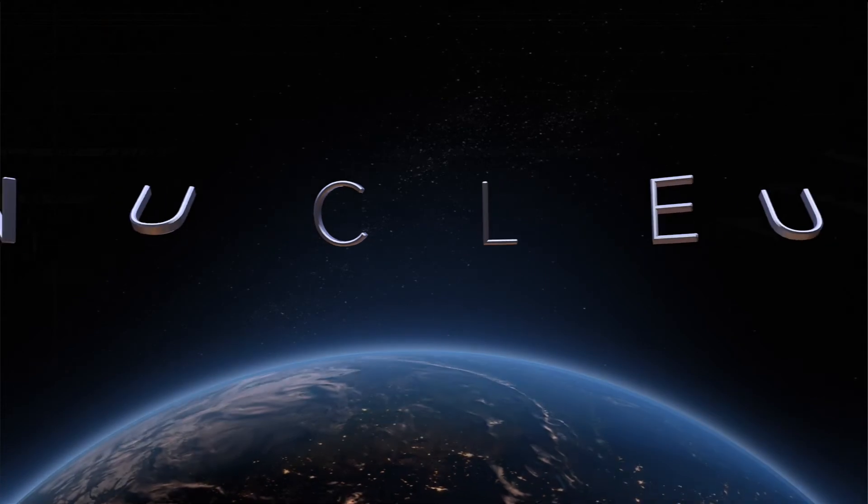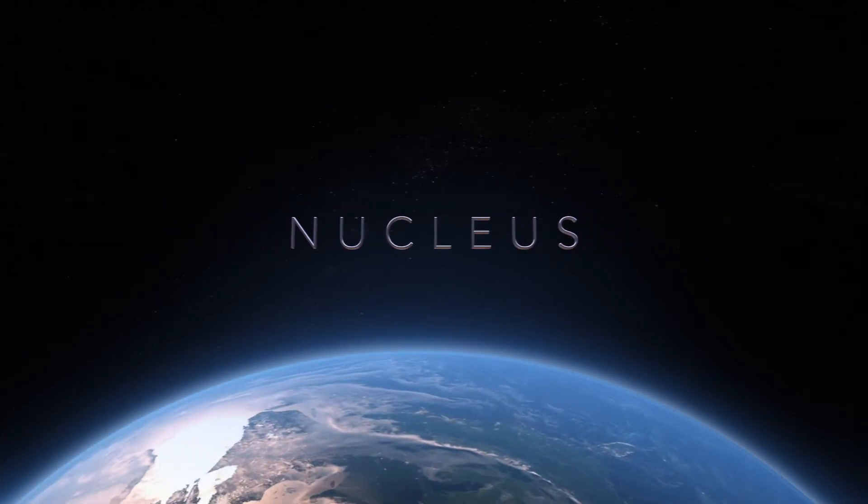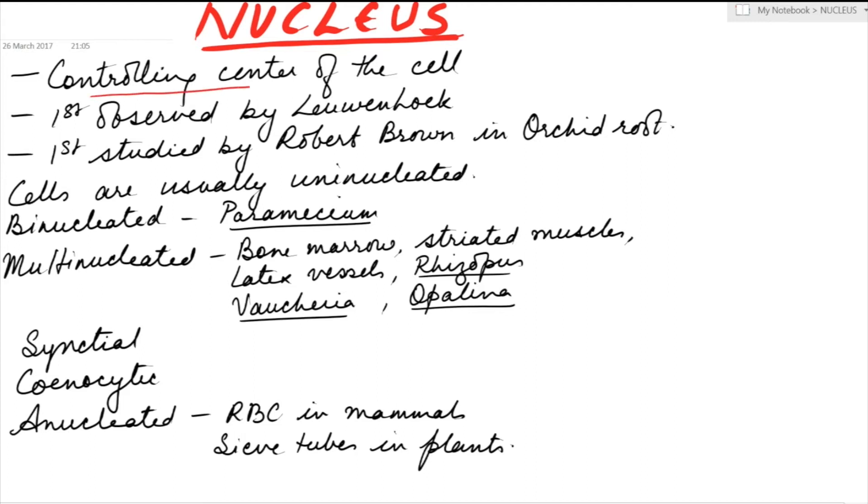Hello everyone, today's topic is nucleus. Nucleus is the controlling center of the cell, proved by Hammerling in Acetabularia. It was first observed by Leeuwenhoek and first studied by Robert Brown in orchid root. Orchid is an epiphyte.